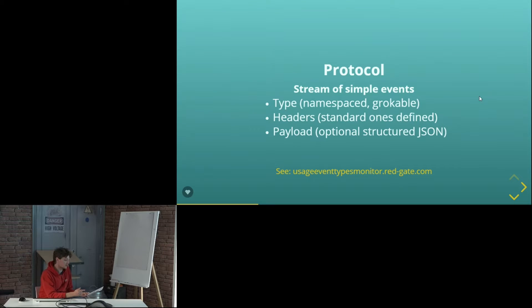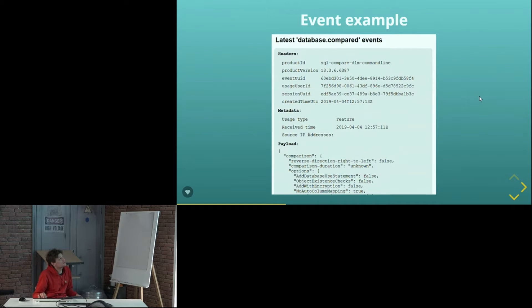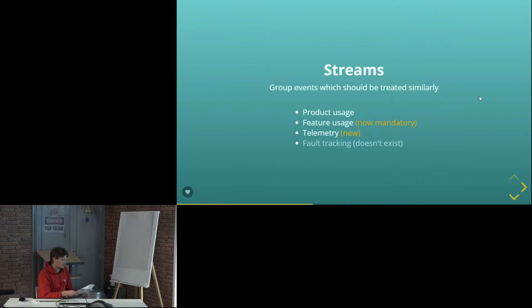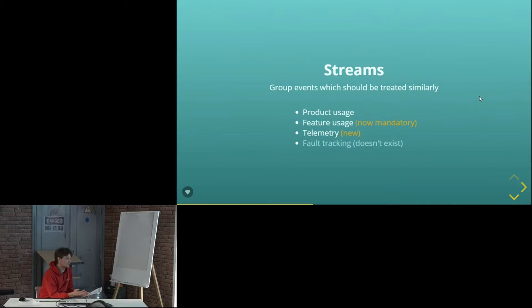The site mentioned here enables you to easily follow existing conventions when naming new events. Here's an example event — we've got the type at the top: database.compared. All those headers there are actually standard ones added by the usage client library. That metadata section is stuff that was added when the event arrived server-side, and then we've got the payload. So, pretty simple. We've got three streams, and they all use the same trivial protocol.